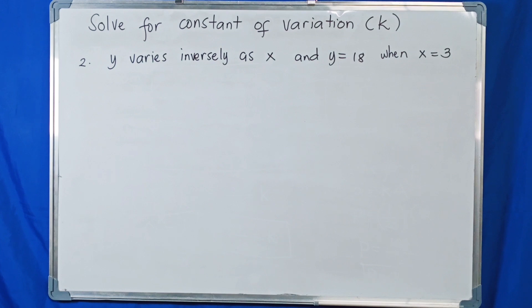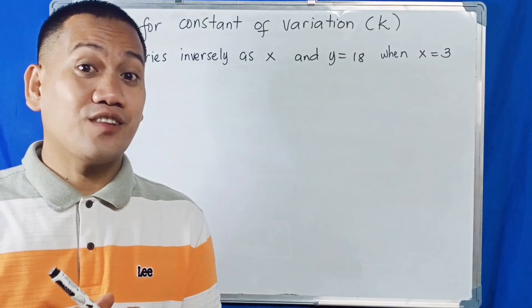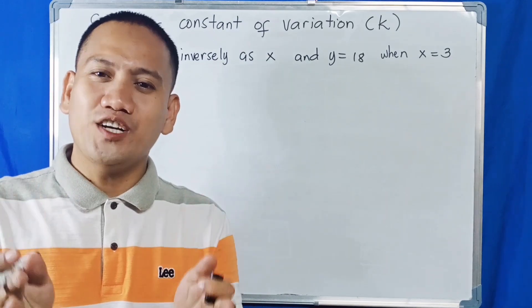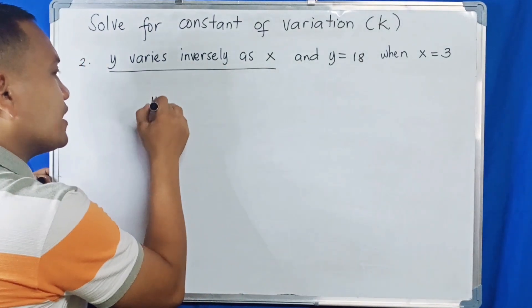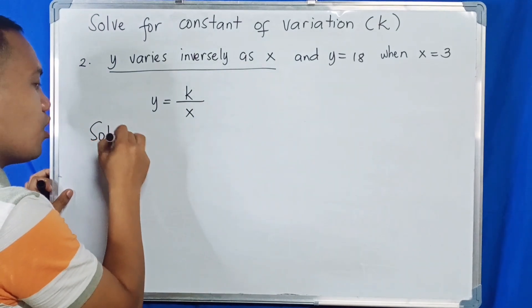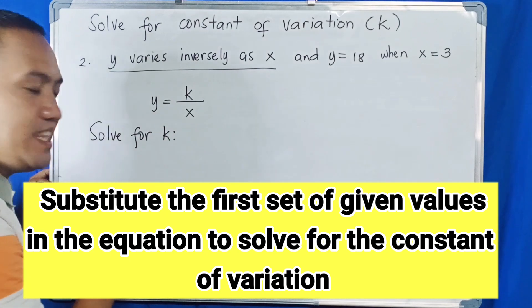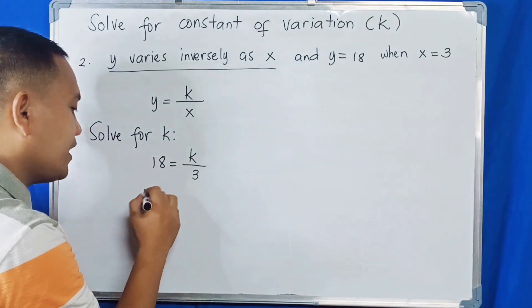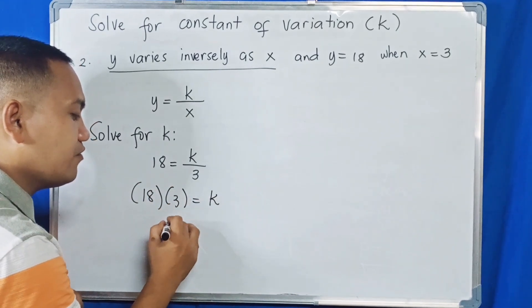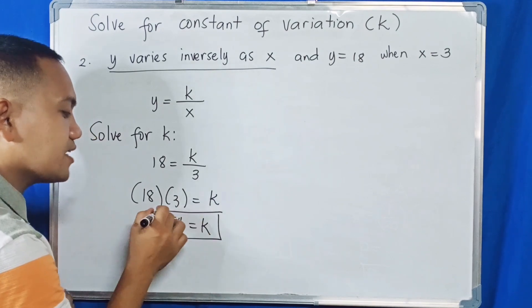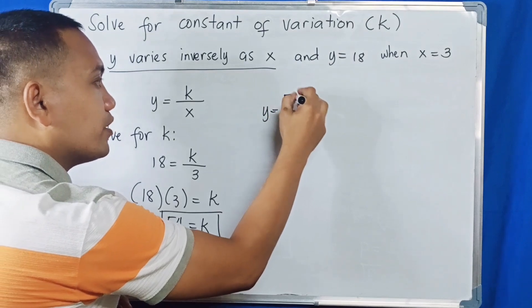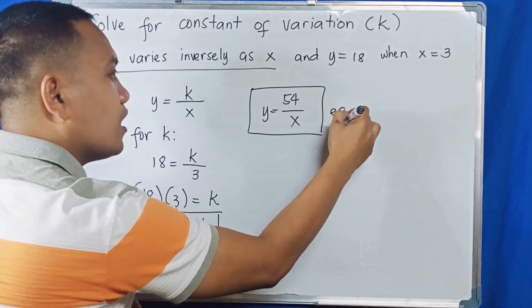Example two: Y varies inversely as X and Y is equal to 18 when X is equal to 3. We write Y equals K over X, then substitute: 18 equals K over 3. By cross multiplication, 18 times 3 equals K, so K equals 54. The constant of variation is 54, and the equation of variation is Y equals 54 over X.